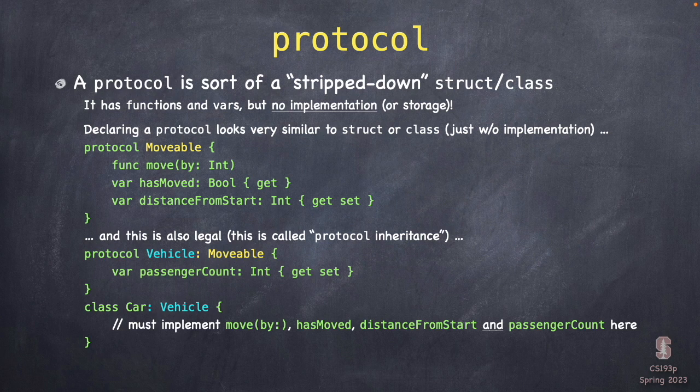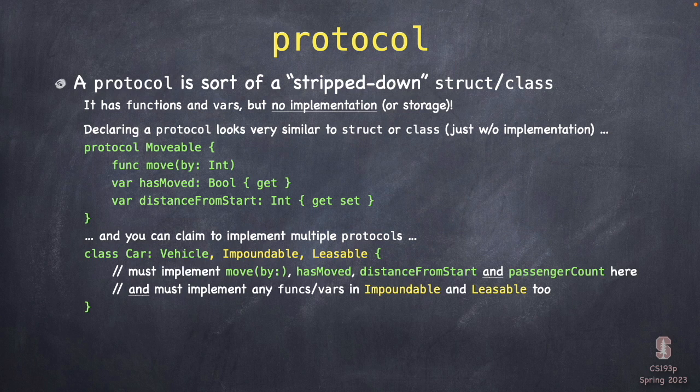When a struct does 'colon Movable', we say it conforms to the Movable protocol. You can also have protocol inheritance — protocol Vehicle that behaves like Movable inherits those vars and adds its own, so anything conforming to Vehicle must implement all four things. You can also have a struct or class implement multiple protocols by listing them with commas — that's quite common, and we'll do that in our demo.